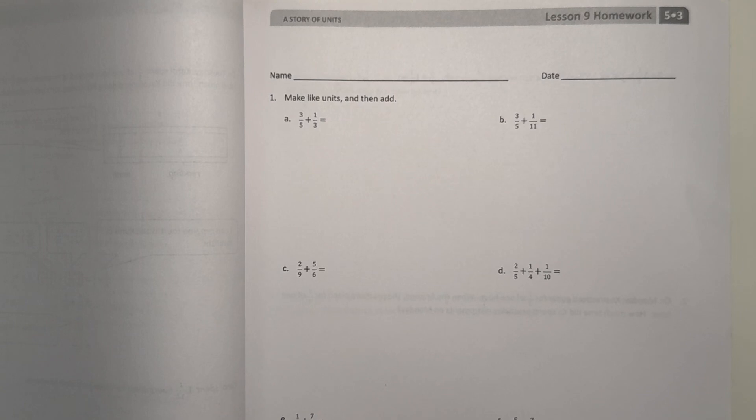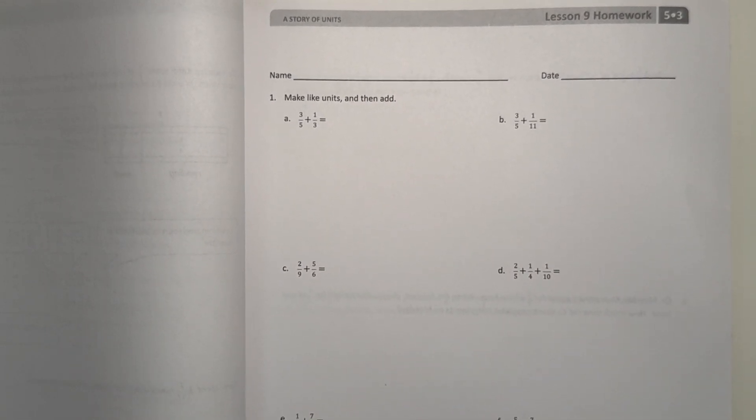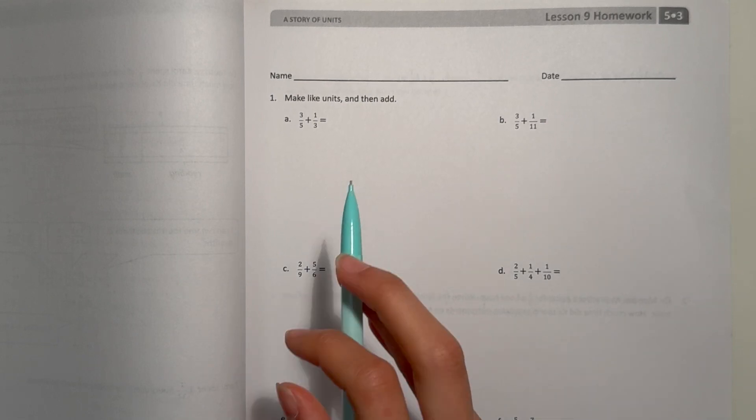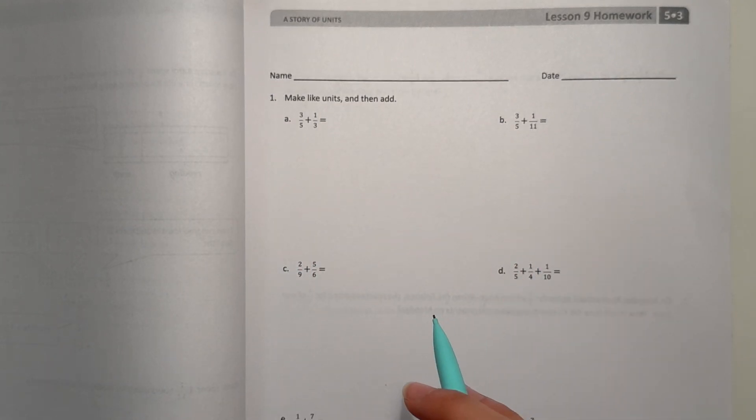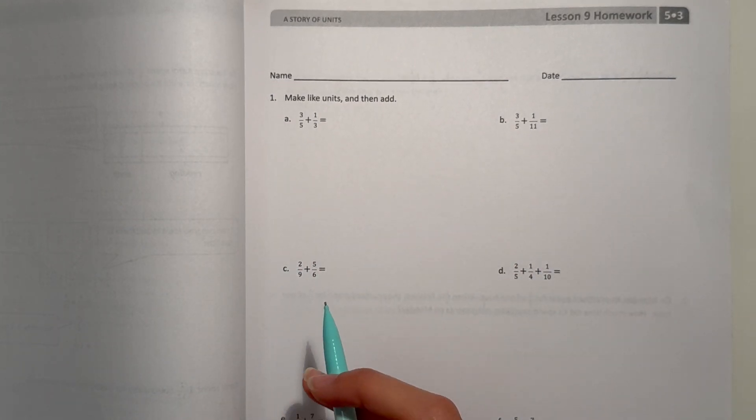Hey guys, I'm here today doing the Eureka Math Grade 5 Module 3 Lesson 9 homework. Let's get started. Number one: make like units and then add. So for part a, we have three fifths plus one third.